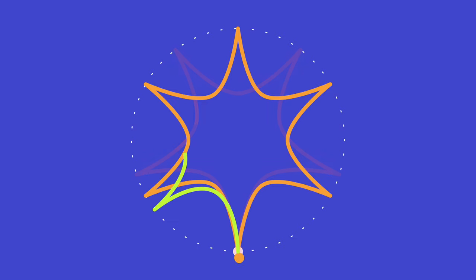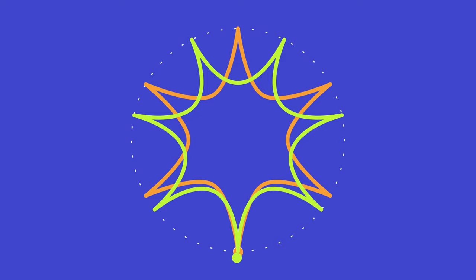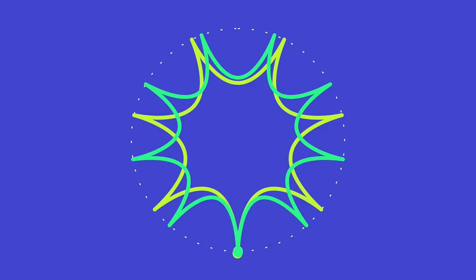A seven-pointed star looks like this, and six against seven sounds like this. I'm going to skip the eight-pointed star because it overlaps a lot of the same points beneath it, like the two and four-pointed star, so it doesn't add a whole lot of new rhythm. We'll go to the nine-pointed star instead, and seven against nine sounds like this.